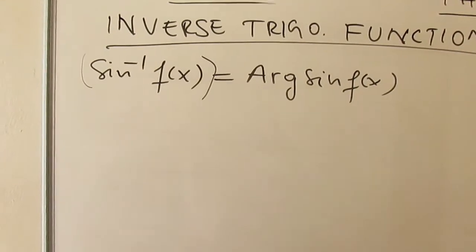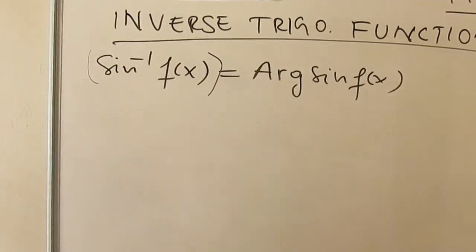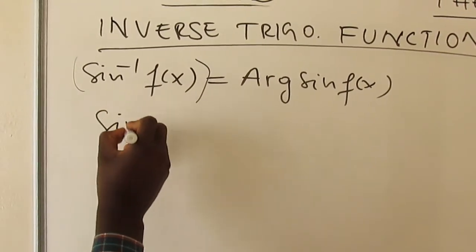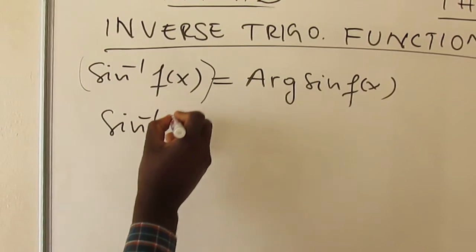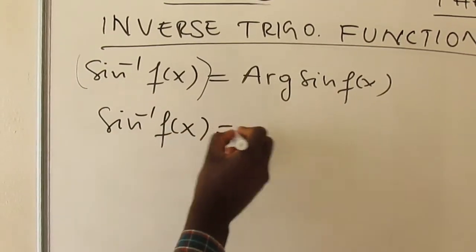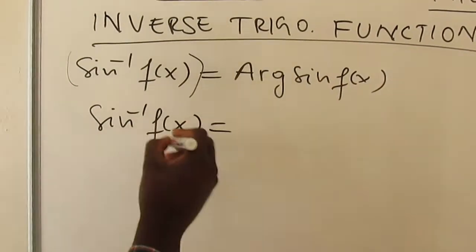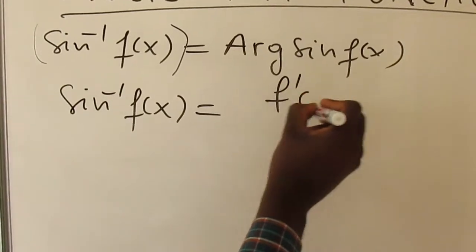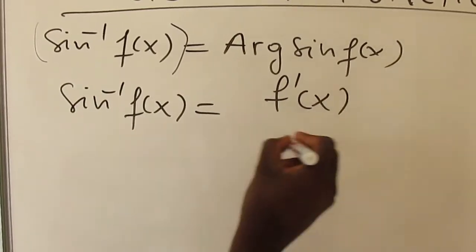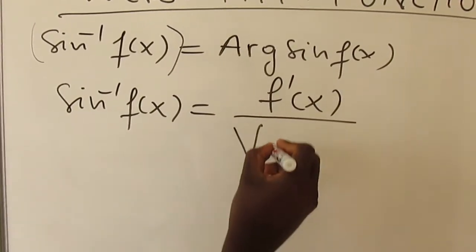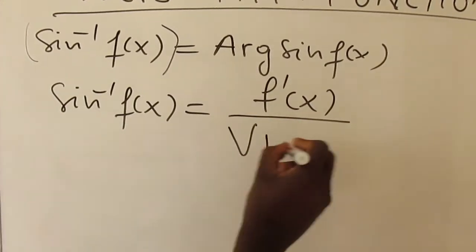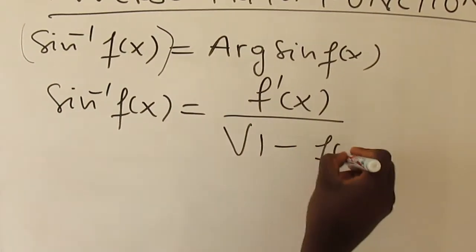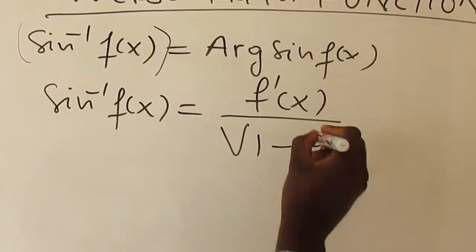So what is the derivative of arc sine of f(x)? First you derive f(x), then you divide over the square root of 1 minus f(x) squared.